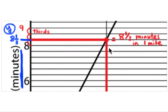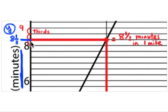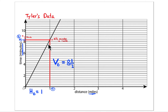Zooming in closer, at the one-mile mark the line intersects at a point. Following that grid line over to the y-axis lands at eight and one-third minutes. Counting up: each grid line represents one-third of a minute — one-third, two-thirds, three-thirds — confirming this line is at eight and one-third minutes. So it takes Tyler eight and one-third minutes to run one mile.